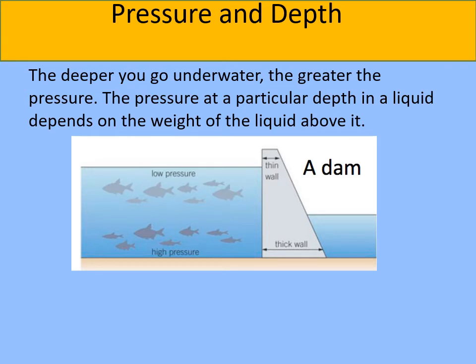When we talked about atmospheric pressure, we said that as you increase height above sea level the pressure decreases. When talking about pressure in liquids such as water, if we go deeper — so the depth increases — the pressure gets much much bigger. If you ever see a dam, the bottom of the wall at greater depth is a lot thicker than the wall further up in the shallower part, because the pressure at the bottom is a lot bigger than the pressure at the top.